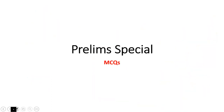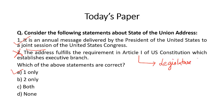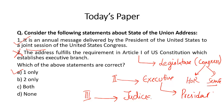Now for prelims-based questions. Consider statements about the State of the Union Address: it is an annual message delivered by the President of the United States to a joint session of Congress — correct. The address fulfills a requirement in Article 1 of the US Constitution which establishes the executive branch — wrong. Article 1 establishes the legislature (Congress: House of Representatives and Senate). Article 2 establishes the executive. Article 3 establishes the judiciary. So only statement 1 is correct.